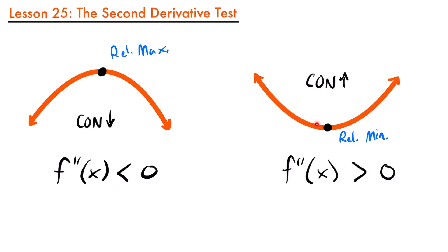If you know what your critical values are and then you test them on your second derivative to see if the value is less than zero or greater than zero, you can determine whether you have a relative max or a relative min. Now before we look at an example of using the second derivative test, let's quickly look at the formal definition so we really get an idea of what we're doing.